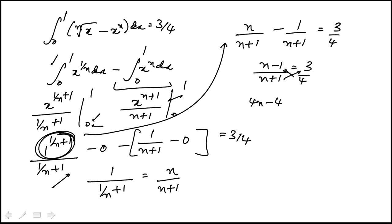4n minus 4 equal to 3n plus 9. I'm also distributing. That goes here, becomes 7. Knock out the 3n. I get n equal to 7.